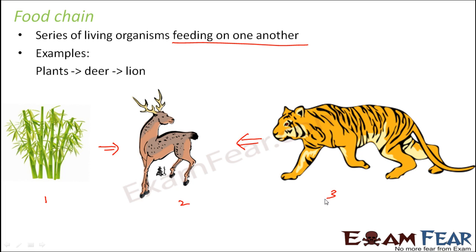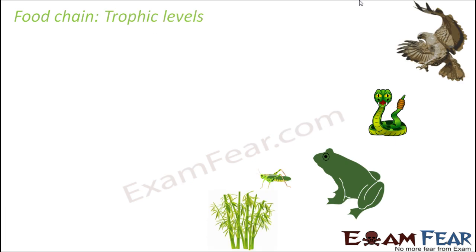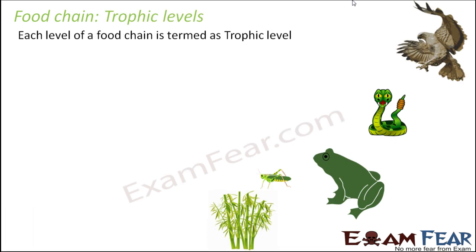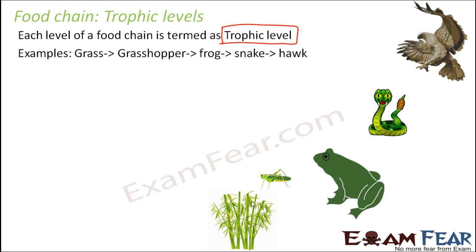In a food chain there are different levels. Some food chains have four steps, some have five, some can even have six. Each level of a food chain is known as a trophic level — first, second, third trophic level, and so on. You can also see on screen the example of grass eaten by a grasshopper, grasshopper eaten by a frog, frog eaten by a snake, and snake eaten by a hawk — five steps in total.